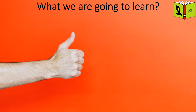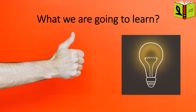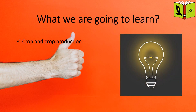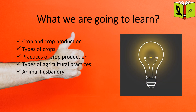In this chapter, we will be learning the following topics: Crop and crop production, types of crops, practices of crop production, types of agricultural practices, animal husbandry. Finally, there will be a questions and answers session to revise what we learned from this chapter.